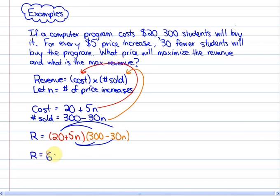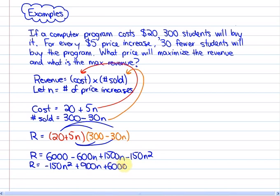Now, what we can do is put this into standard form. Standard form here would be $6,000 minus $600n plus $1,500n minus $150n squared. So, when we collect like terms, we will have that as negative $150n squared plus $900n plus $6,000.